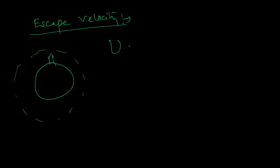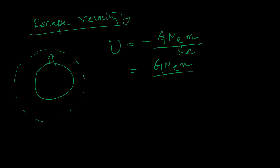If the object is on the Earth's surface, bringing an object from infinity into the gravitational field requires work W = −G·M_e·m/R_e. The reverse: the object is already in the gravitational field and must be projected with huge velocity to reach infinity — the sign becomes positive with the same magnitude. This positive energy is the escape energy, and it must equal the kinetic energy of the object.